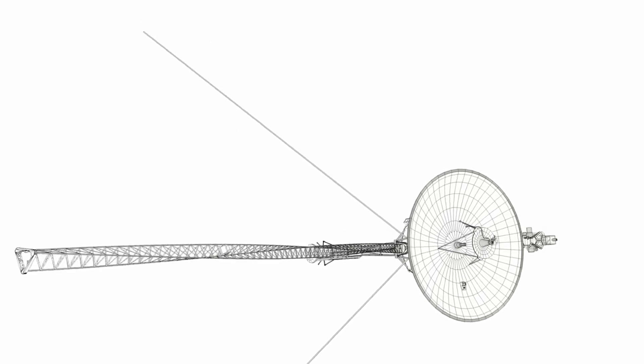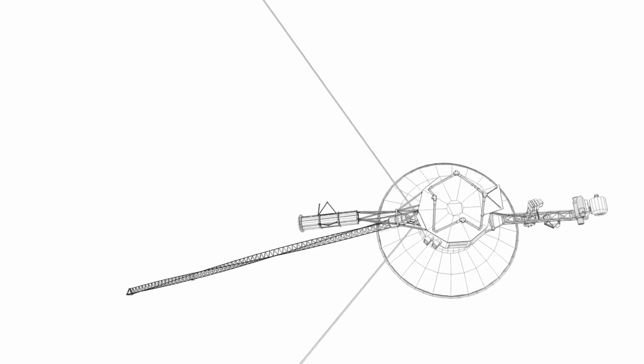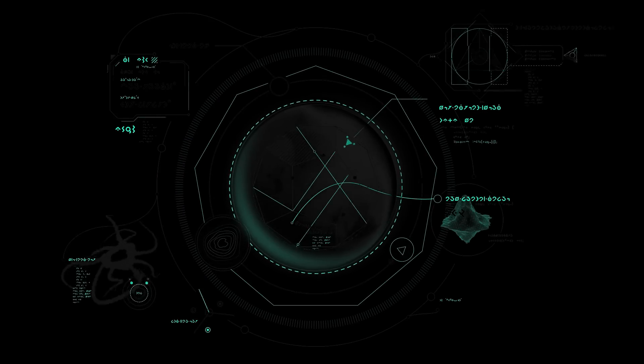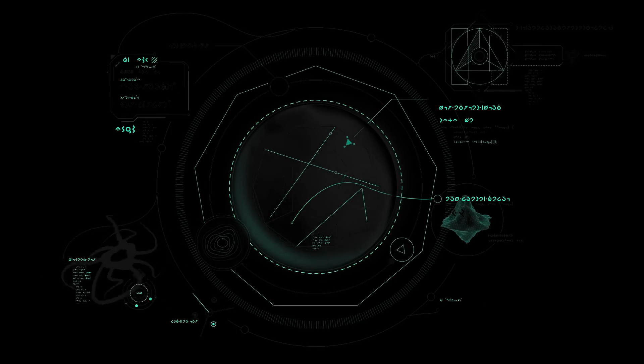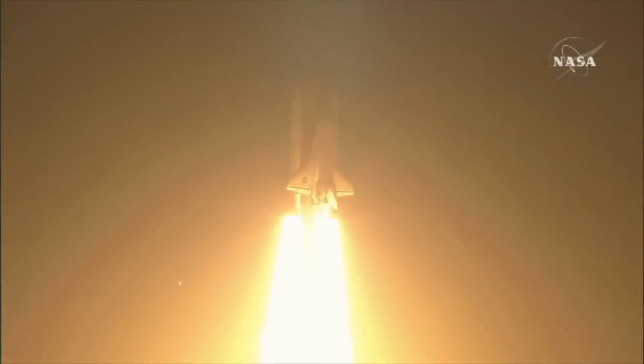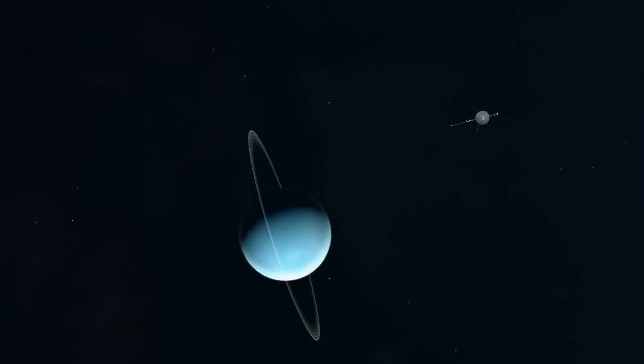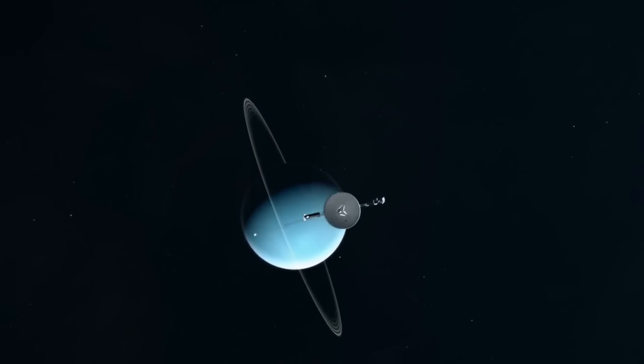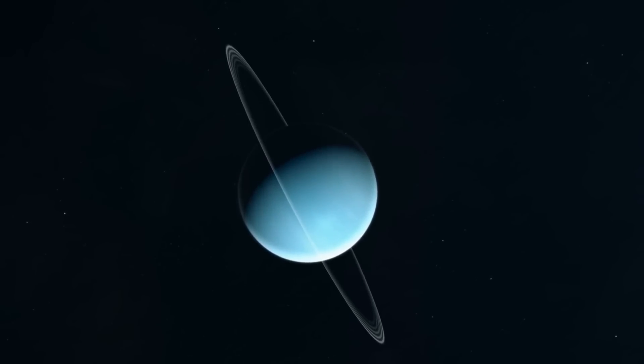The Voyager mission is not just a story of technological achievement; it is also a story of human curiosity and the desire to explore the unknown. The data and images sent back by Voyager 1 and Voyager 2 have fundamentally changed our understanding of the solar system and the universe beyond. These spacecraft have provided us with our first close-up views of the outer planets and their moons, revealing a richness and diversity that was previously unimaginable. The Voyager mission has also sparked new questions and inspired a new generation of scientists and engineers to continue the exploration of space.